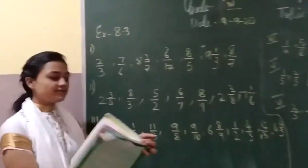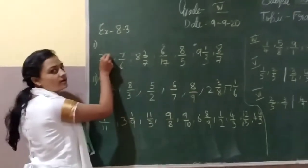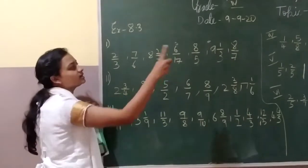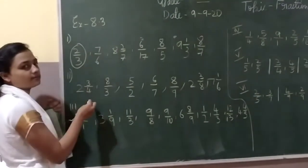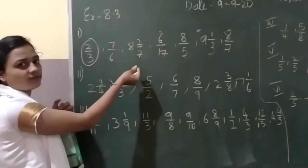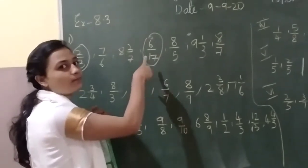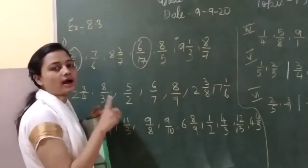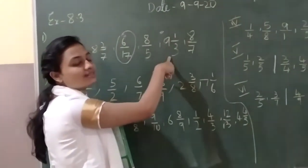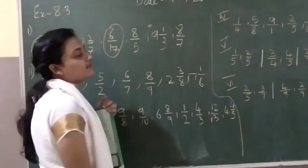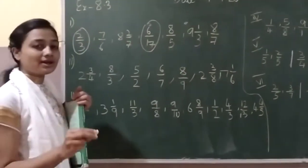The first question: circle the proper fractions. You know what a proper fraction is — my numerator should be small. Two by three: numerator is small, so it's a proper fraction — circle it. Seven by six: numerator is big, not a proper fraction. Eight, two by seven: it is a mixed fraction, so it doesn't count. Six by seventeen: numerator is small — circle it. Eight by five: numerator is big, do not circle it. Nine, one by three: even though the fraction part is proper, there is a whole number, so it's a mixed fraction, not proper. Eight by seven: eight is bigger, not a proper fraction.